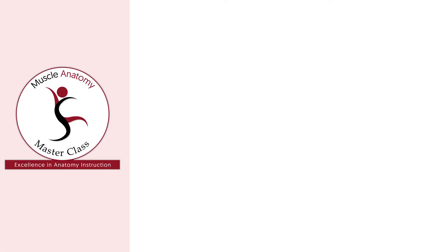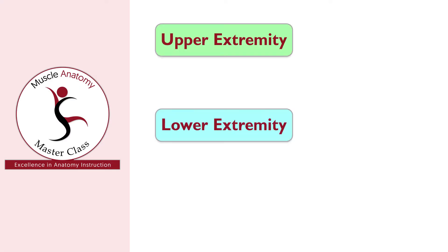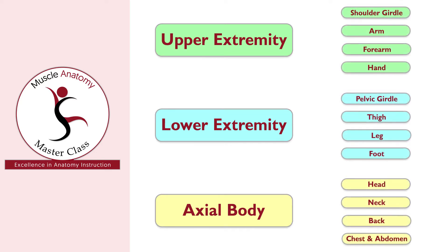It is divided into three regions: upper extremity, lower extremity, and axial body. Each region is divided into four modules, with each module containing the muscles of that body part.